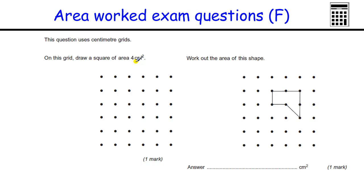On this grid, draw a square of area 4cm squared. This is a cm squared grid, so a square of 4cm squared is going to be roughly like that. Work out the area of this shape, so that's 1, 2, and that's a half a square, so 2.5cm squared.